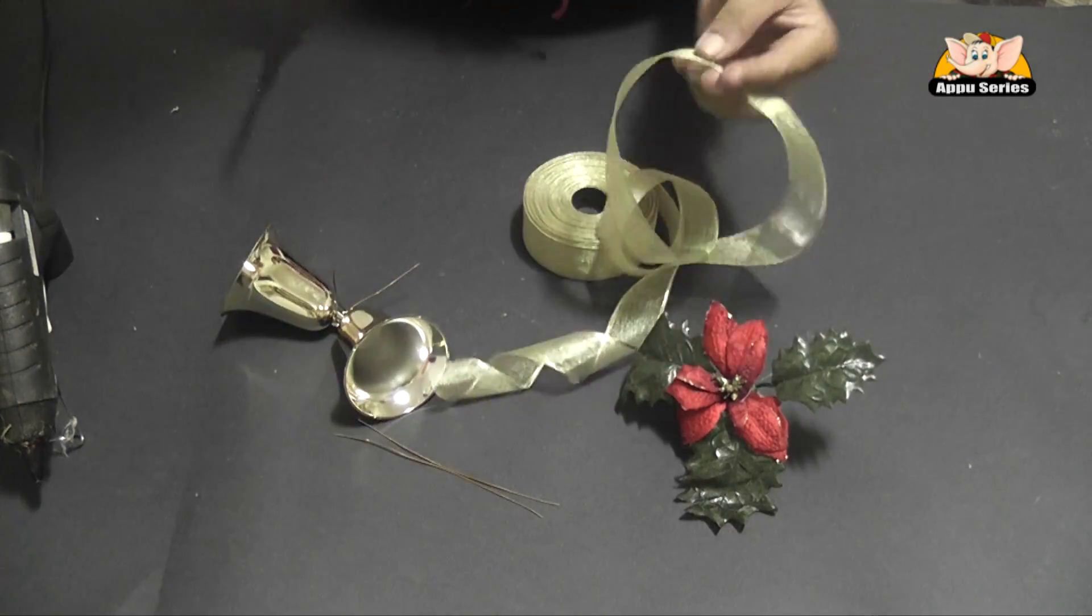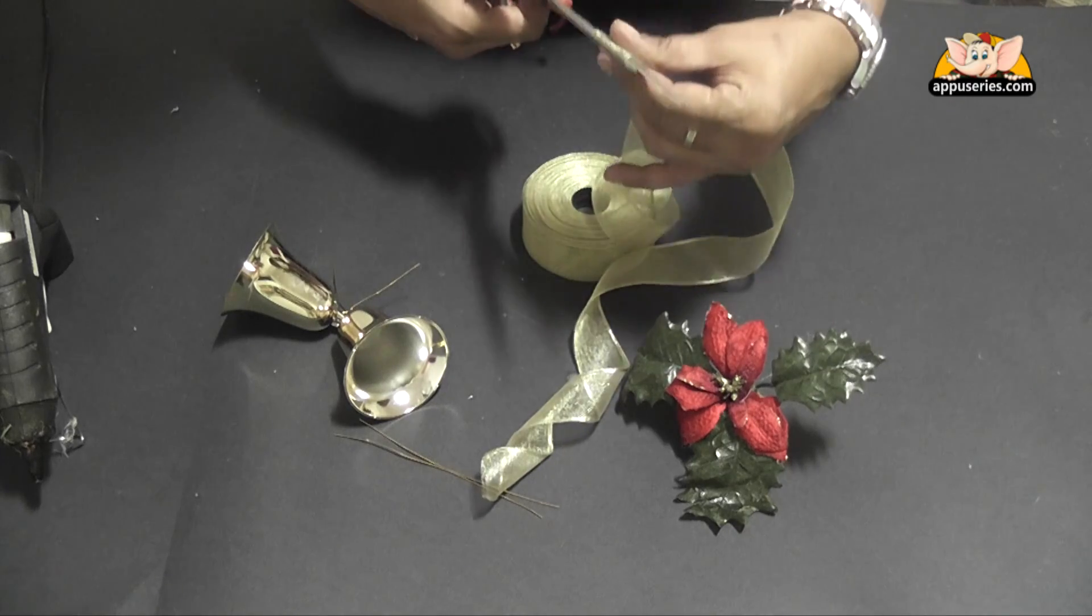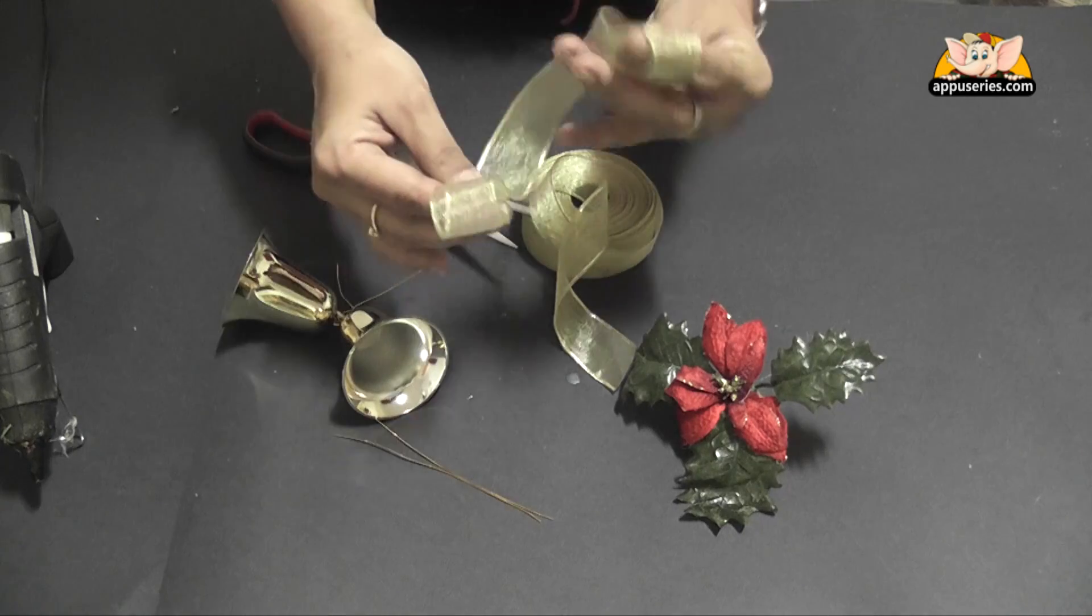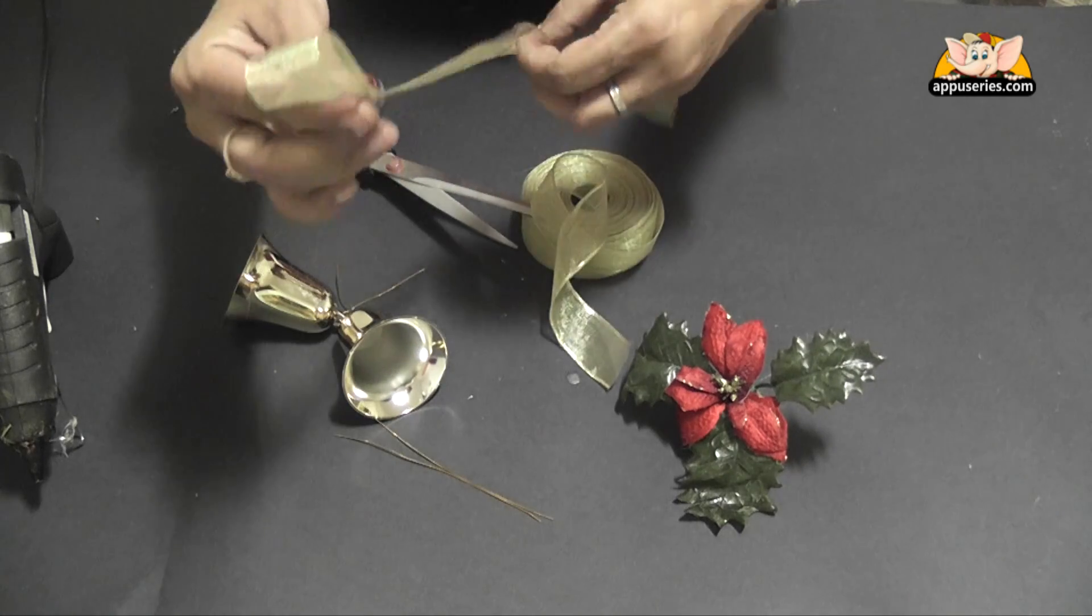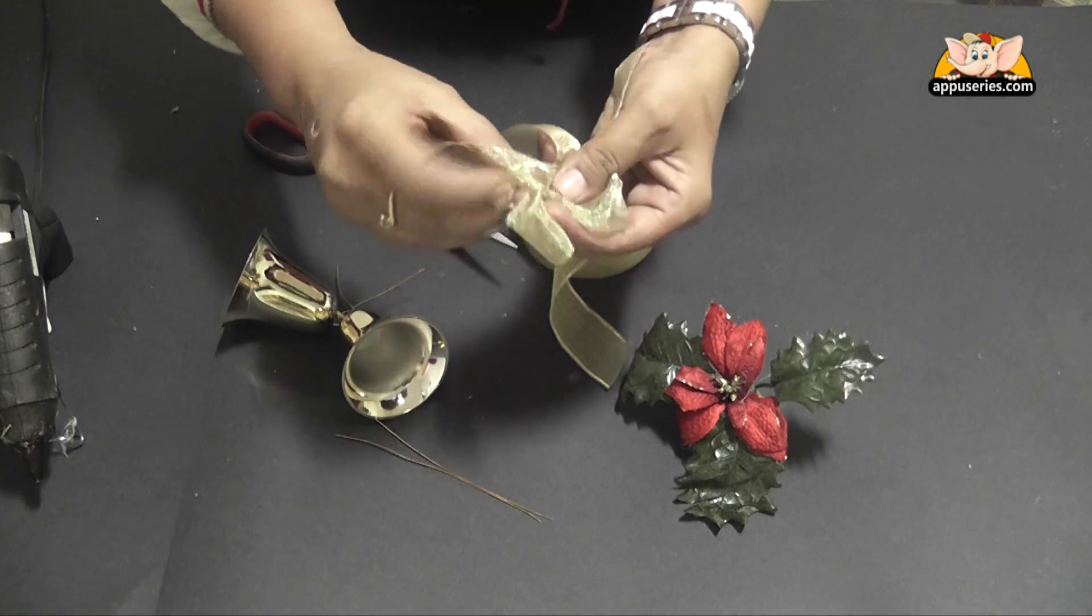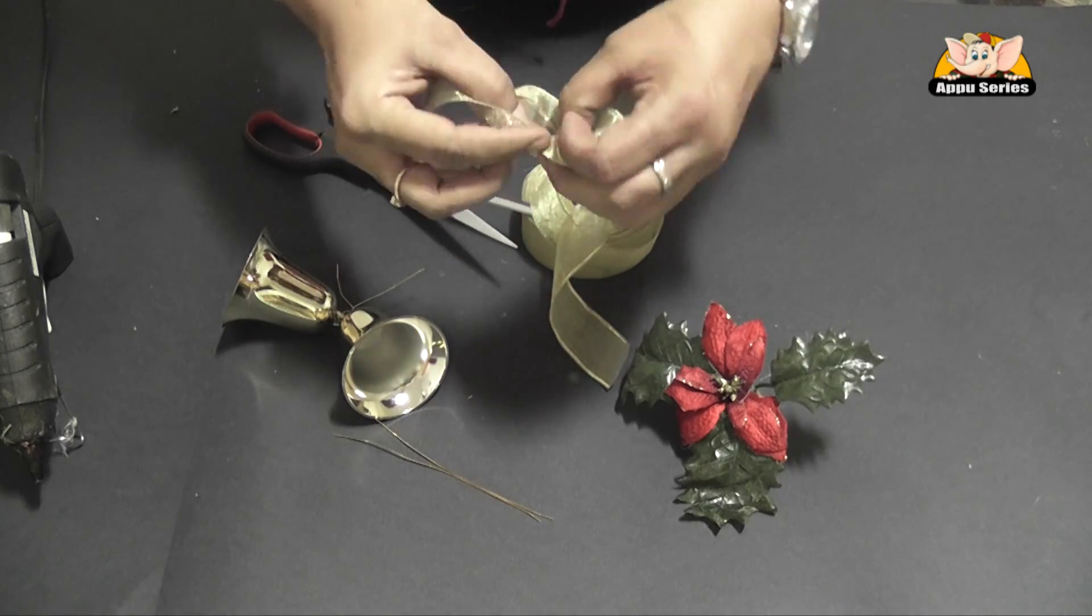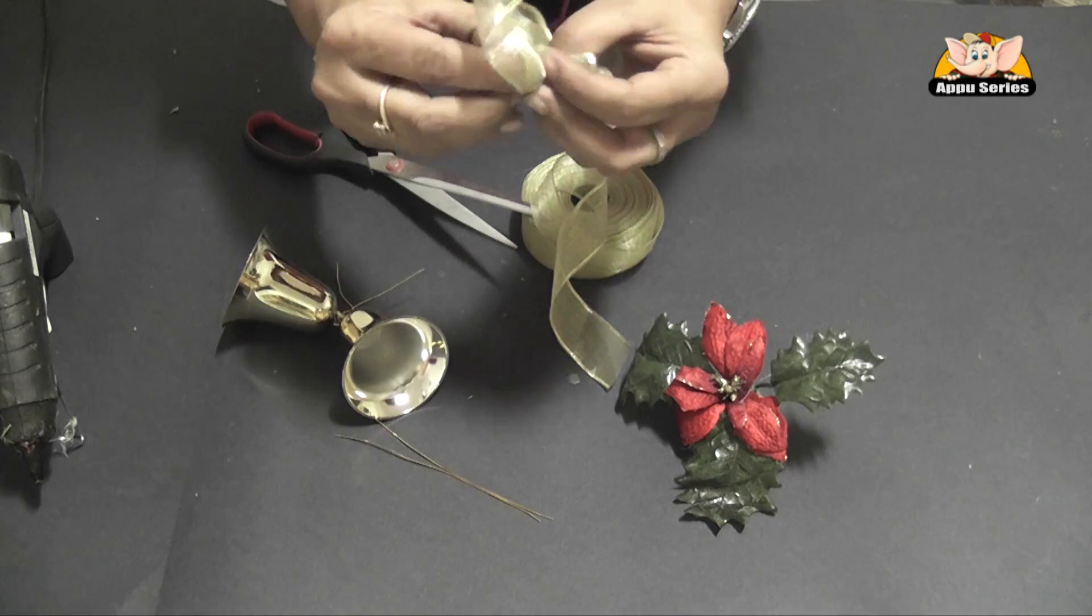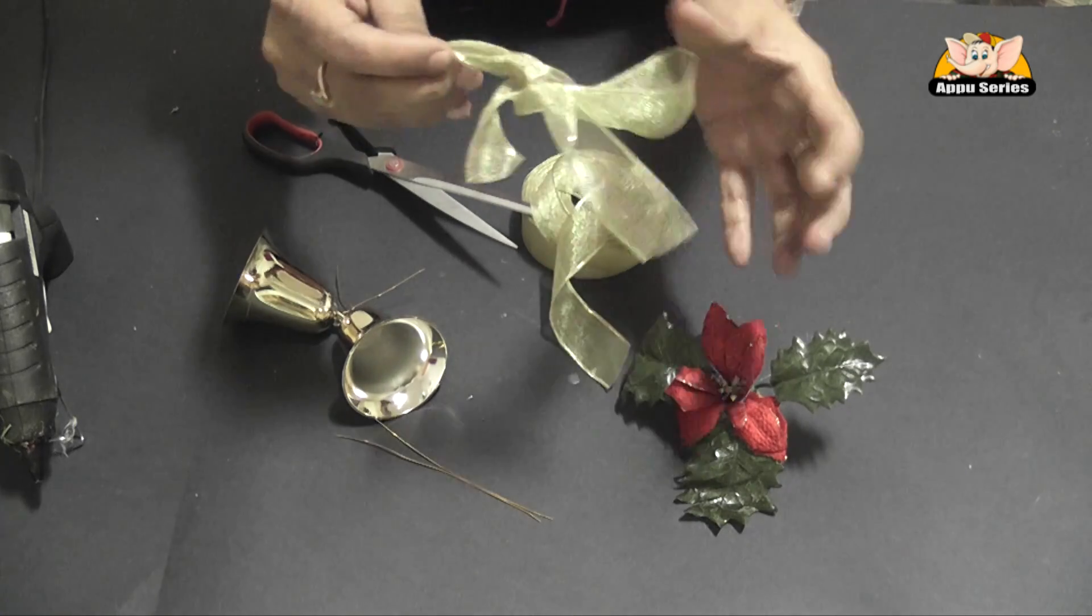Take the lace for the bow. The lace should be about half a meter. We can keep it long or short depending on how big our bells are. So we just twist it around. We have to make sure the bow is looking pretty.